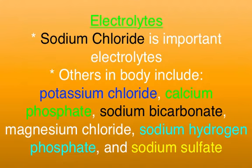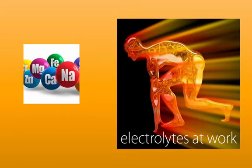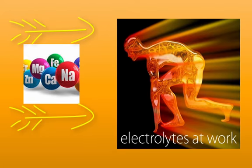The compounds that dissociate in water are called electrolytes. Sodium chloride is an important electrolyte in body fluids. Other important electrolytes are potassium chloride, calcium phosphate, sodium bicarbonate, magnesium chloride, sodium hydrogen phosphate, and sodium sulfate. When these electrolytes are dissolved in body fluids, they become inorganic ions that conduct electricity. An electrolyte imbalance seriously disturbs vital body functions.